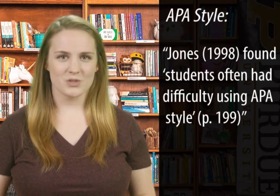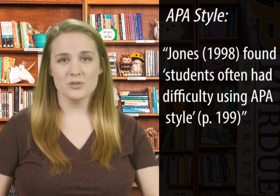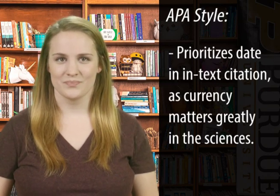In the sciences, for example, the publication date of your source really matters, because if you're referring to an experiment from even 15 years ago, it might be as outdated as the computer it was written on. That's why APA, a style used frequently in the sciences, has writers include the year of publication in the in-text citation.